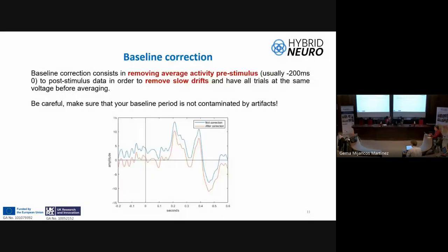Baseline correction is performed 100 milliseconds before the stimulus onset. This procedure is applied trial by trial with the objective of removing slow drift and achieving the same voltage baseline before the stimulus onset. The blue line shows the signal without baseline correction, where the signal is shifted upward, and the orange line shows the signal with baseline correction, aligned to zero.